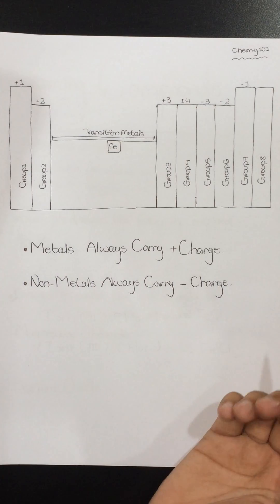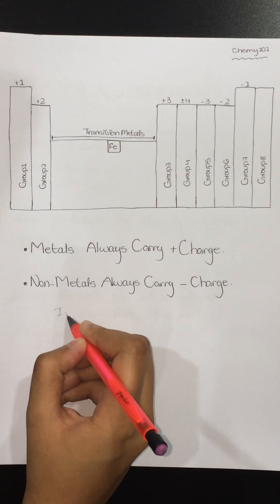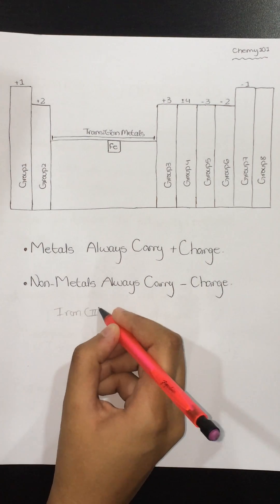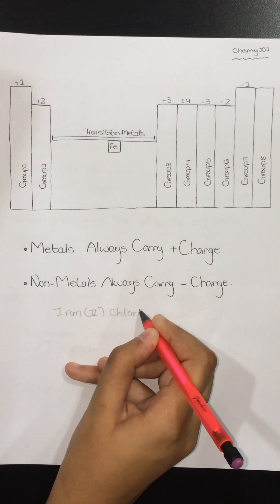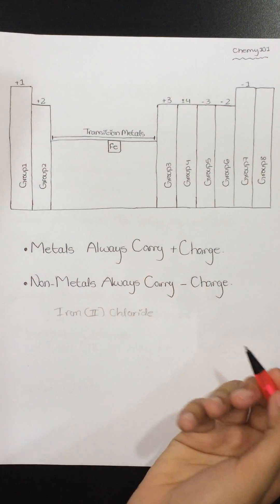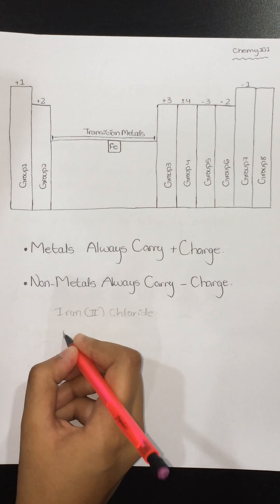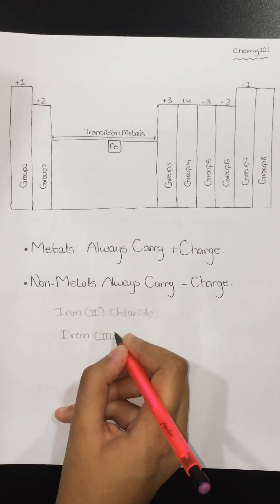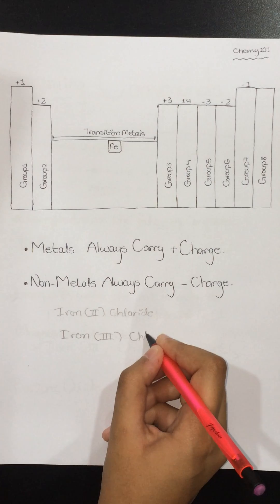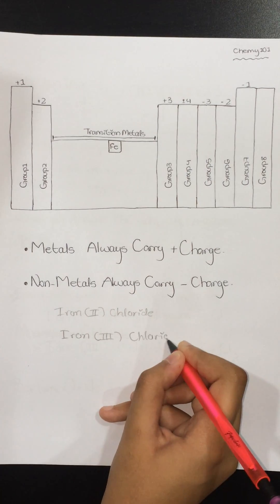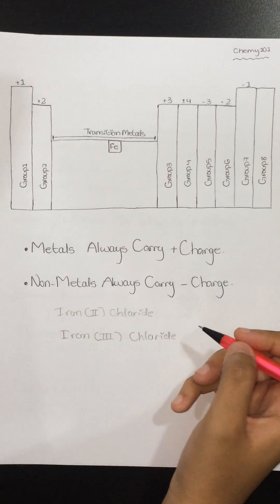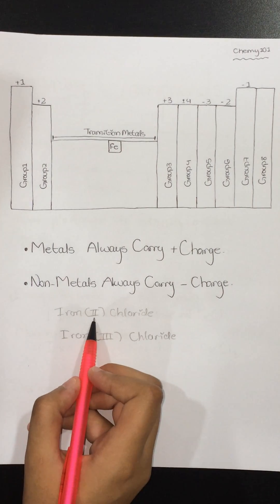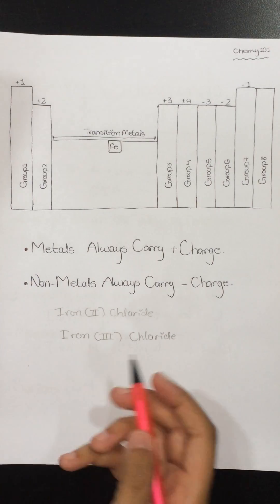It will be written as iron(II) chloride or iron(III) chloride in a compound name. From this notation, you can identify the charge of iron — positive 2 in the first case and positive 3 in the second.